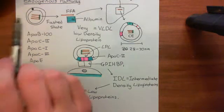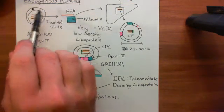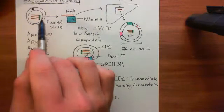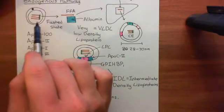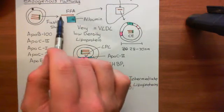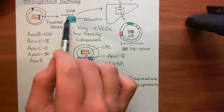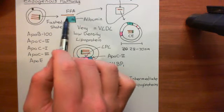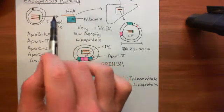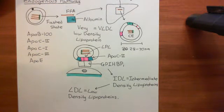What happens is the adipocytes start breaking down their triacylglycerols, which they have stored within a large droplet that takes up most of their cytoplasm, and they start breaking them down to release free fatty acids, which they release directly into the blood. These free fatty acids bind to a protein called albumin, which is within the blood, and albumin is then going to deliver the free fatty acids to hepatocytes in the liver.